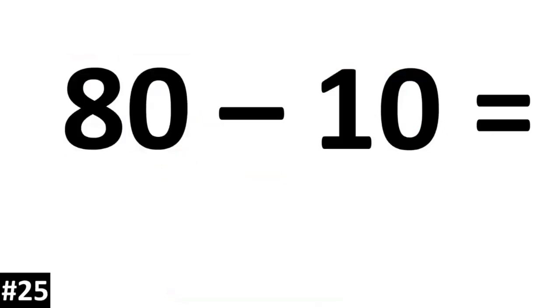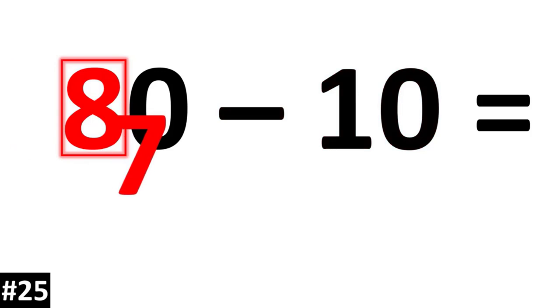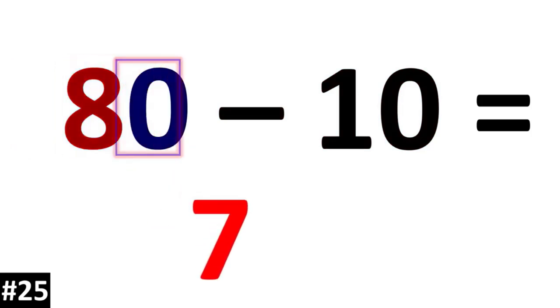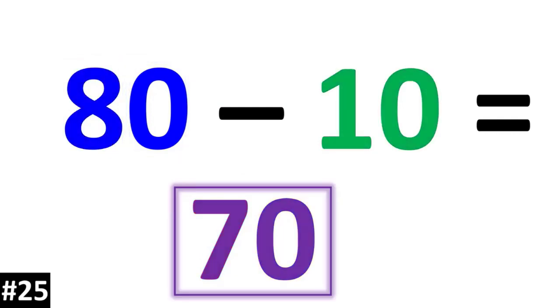80 minus 10. The tens value of 8 is going to go down to 7. The ones value stays the same, so 80 minus 10 is 70.